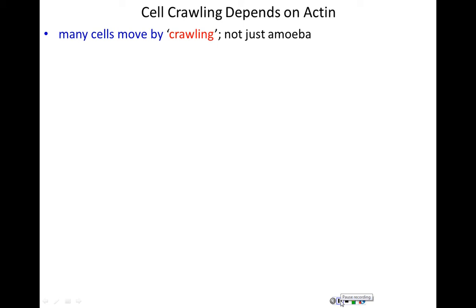The ability of a cell to crawl depends on actin. Many cells move by crawling. We typically associate this type of movement with amoeba, but many different cells including cells in our body move in this way.